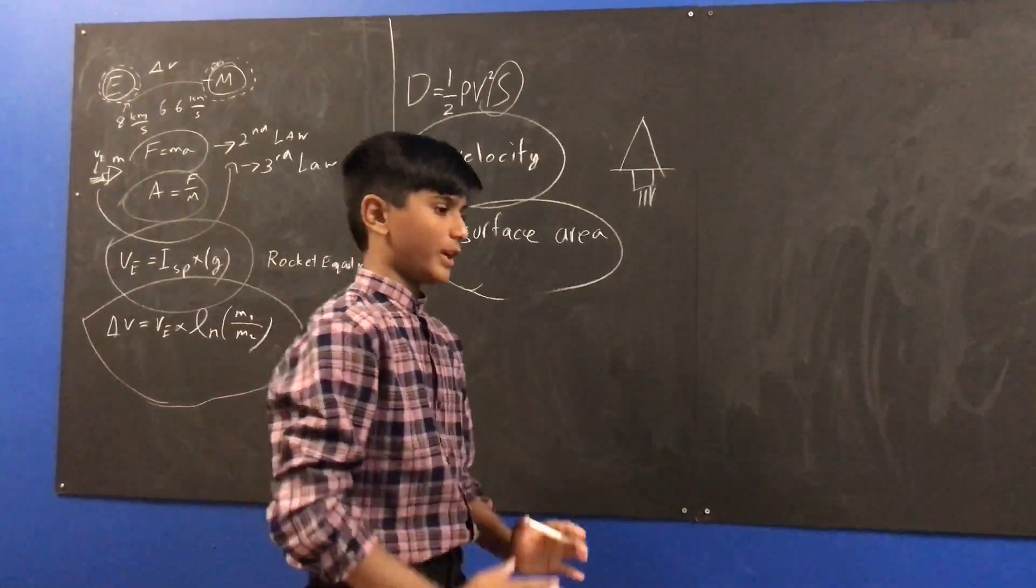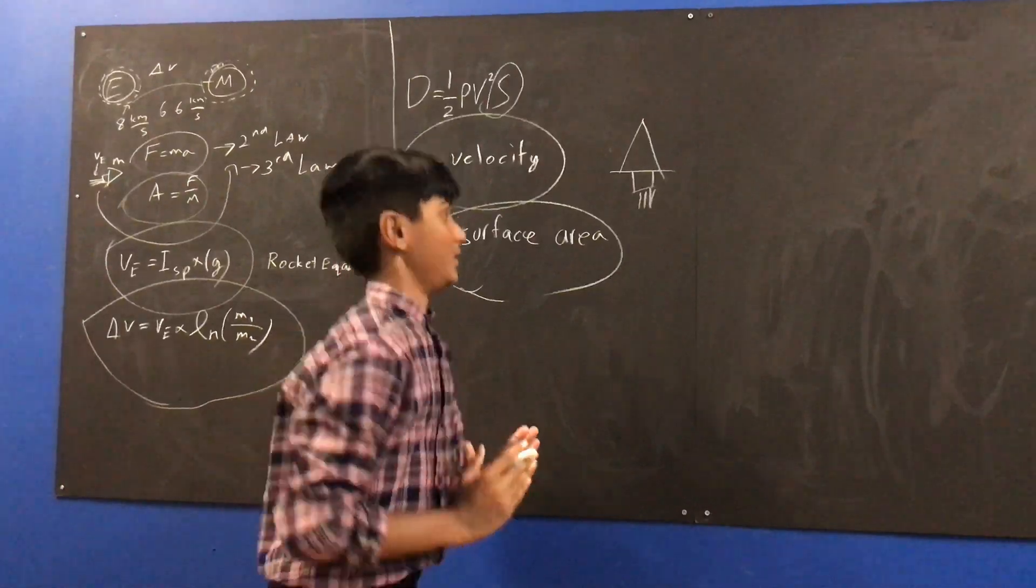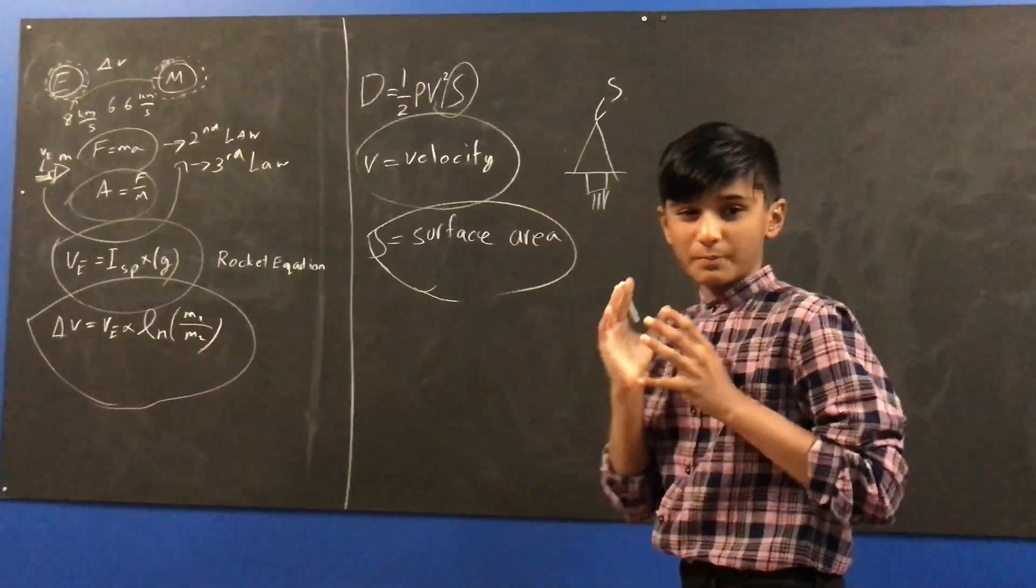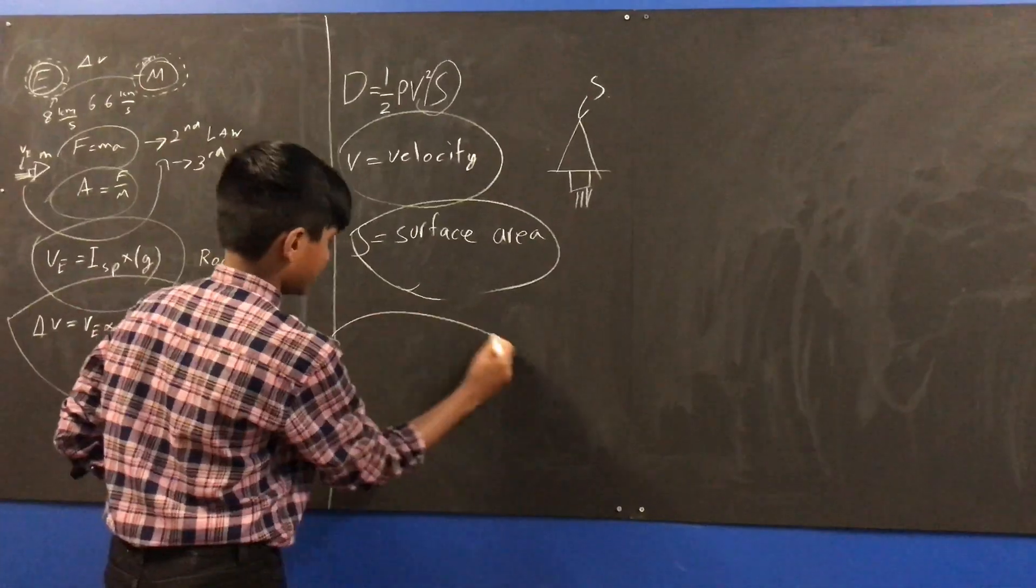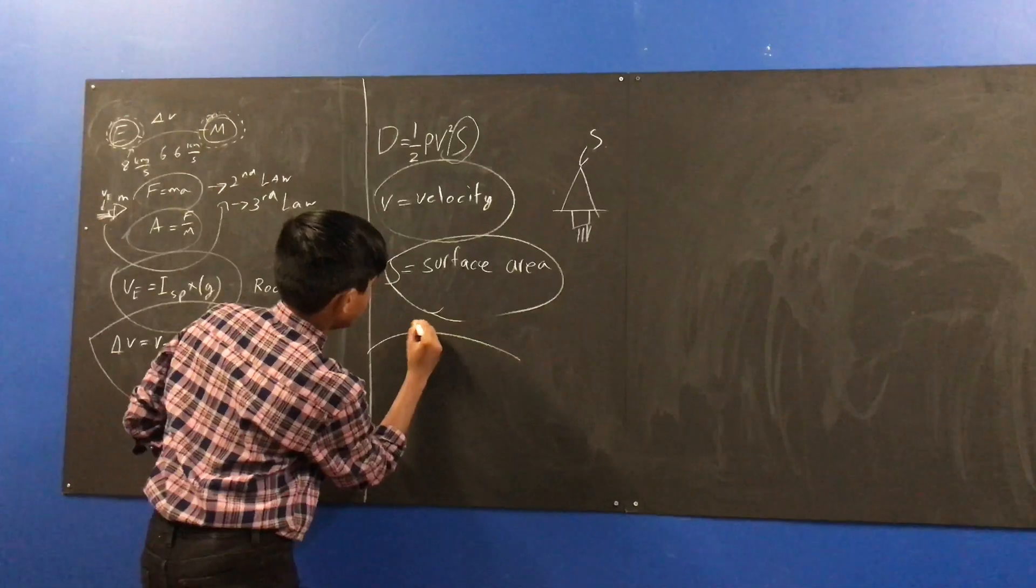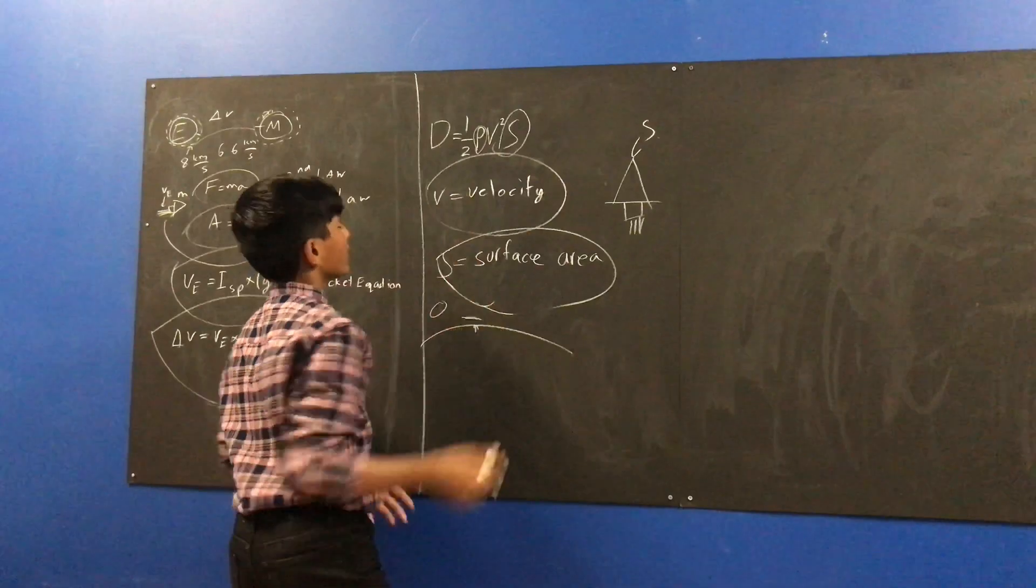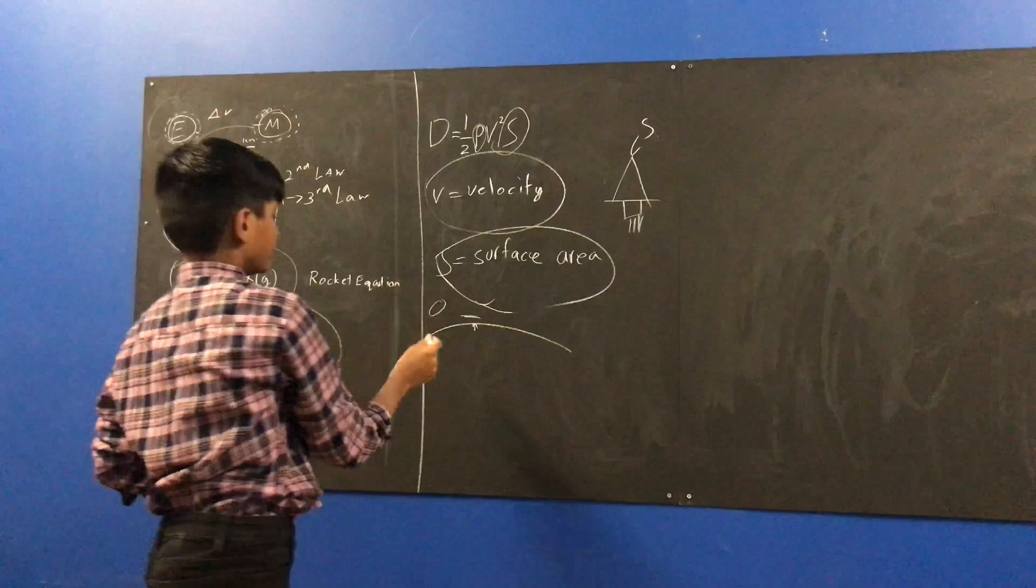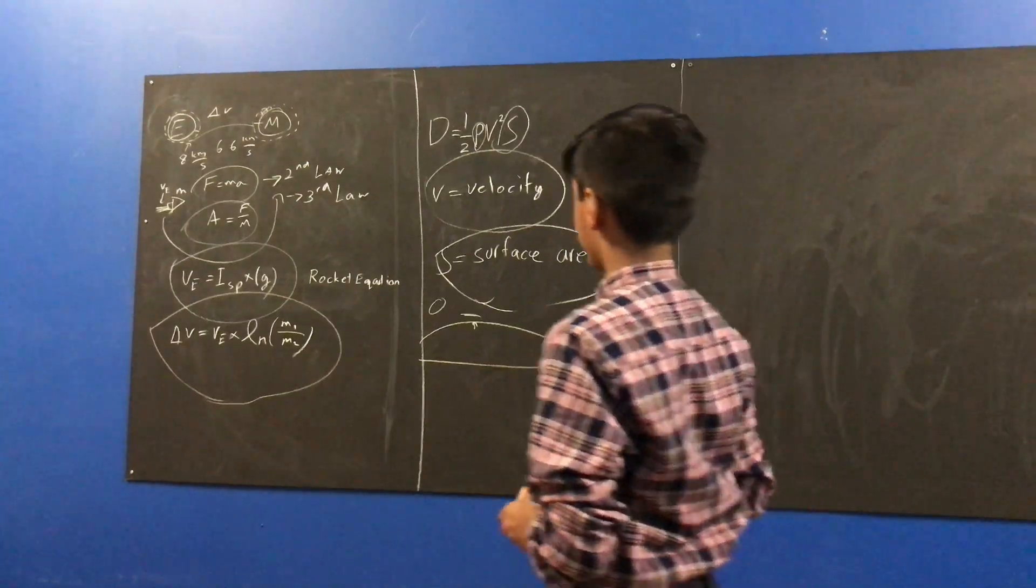So, that's why rockets are pointy. Not only for stability purposes, but it's pointy because your S needs to be as small as possible, so we can overcome drag. But, once you go up here, above this layer here, this is zero. So, the drag is just zero. So, this is a lot more simpler than the rocket equation. But, this is a fundamental part of designing rockets.